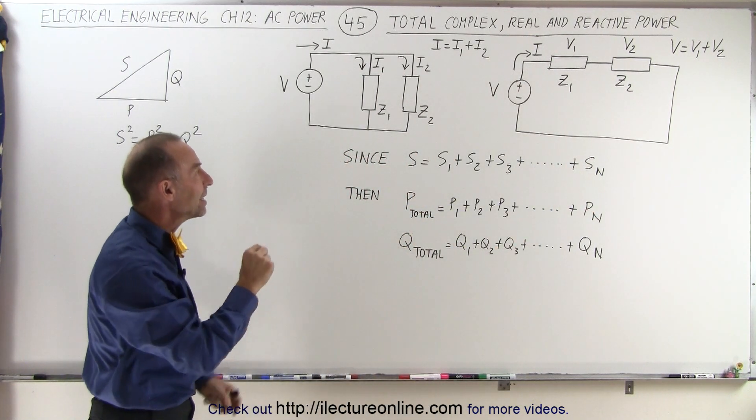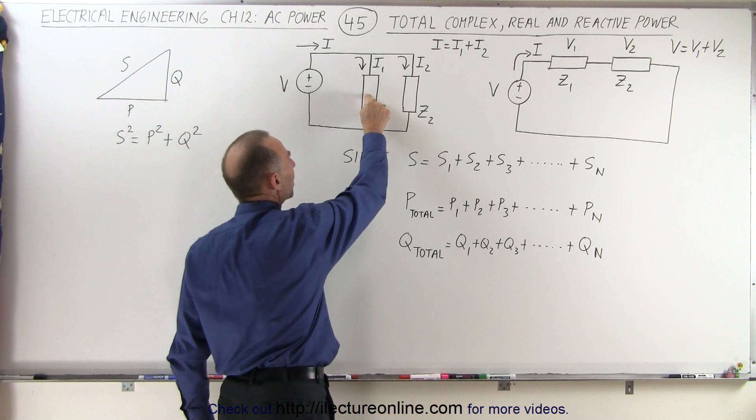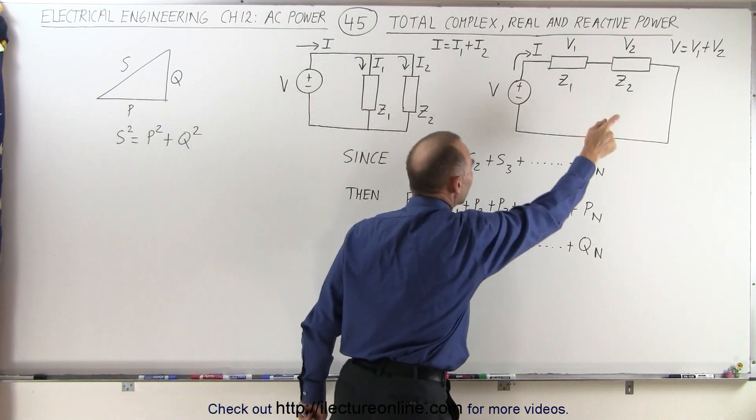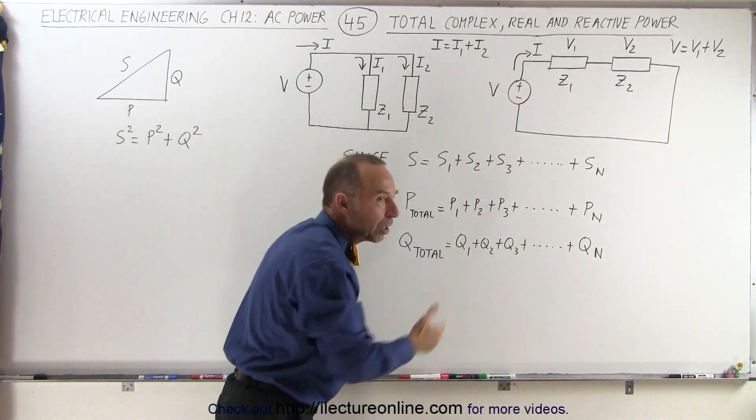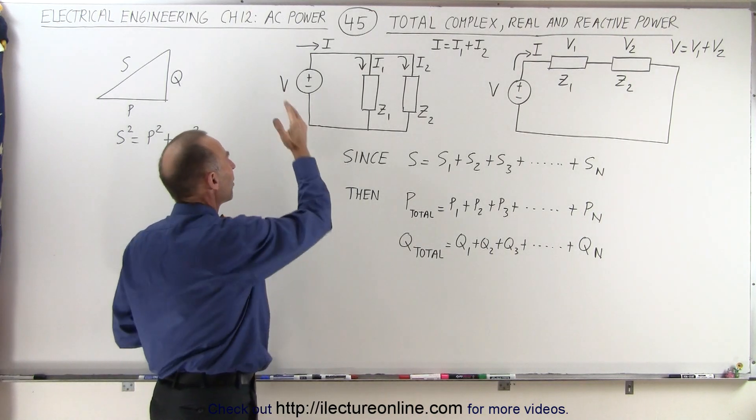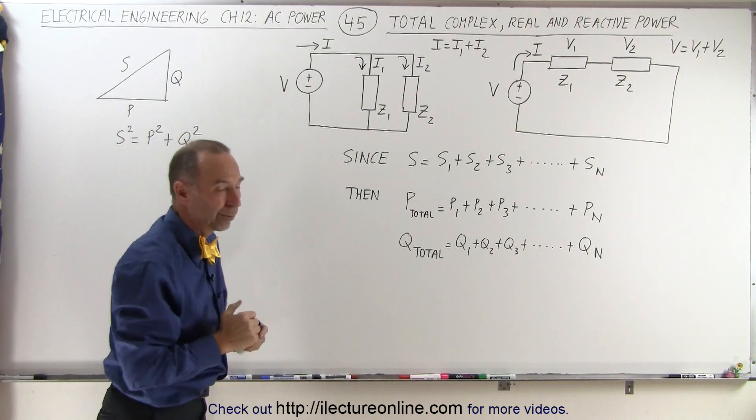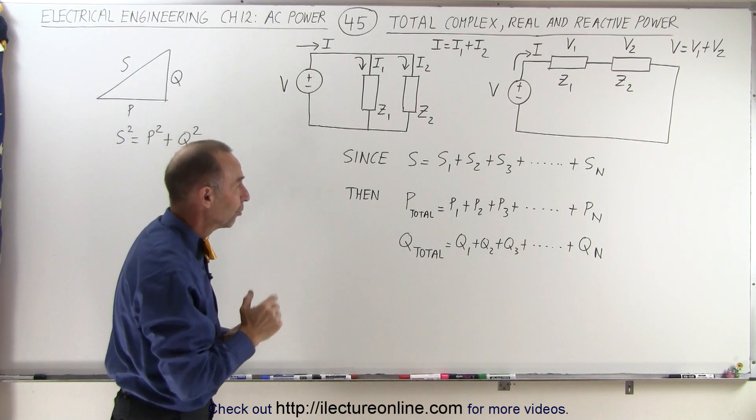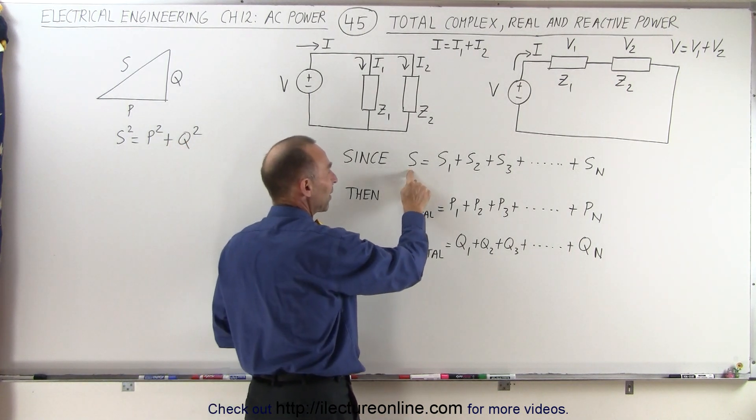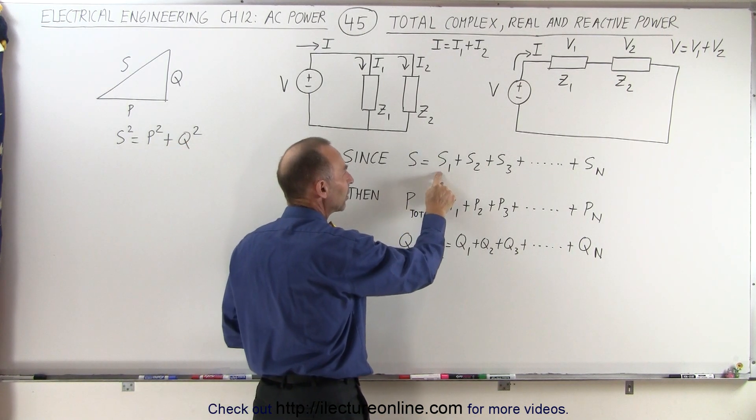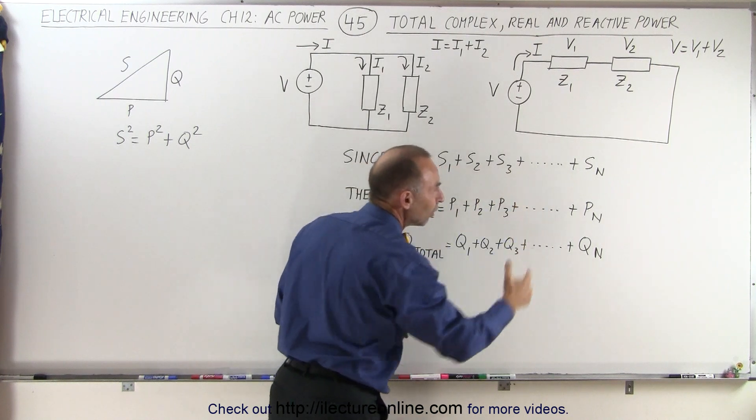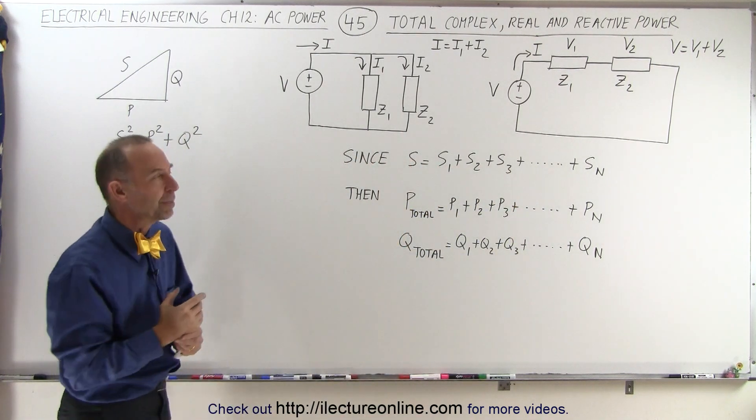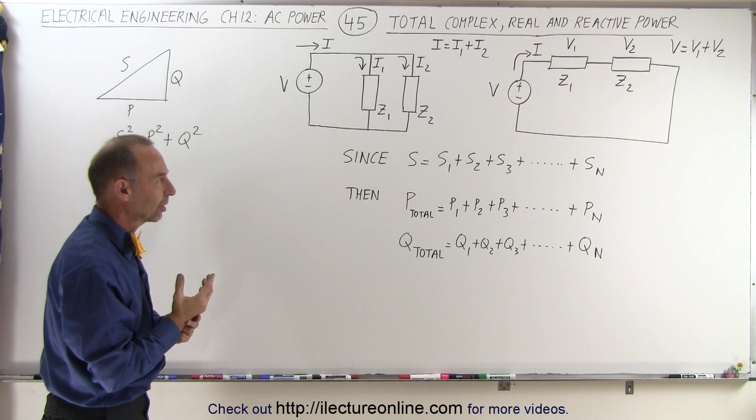we found that the power, the complex power of each of the impedances, if we add them all up, we get the same as the total power provided by the source. We mean the complex power. So we know that the total complex power provided to the circuit by the source is equal to the sum of the individual complex powers on each of the impedances, regardless of how the circuit is set up.